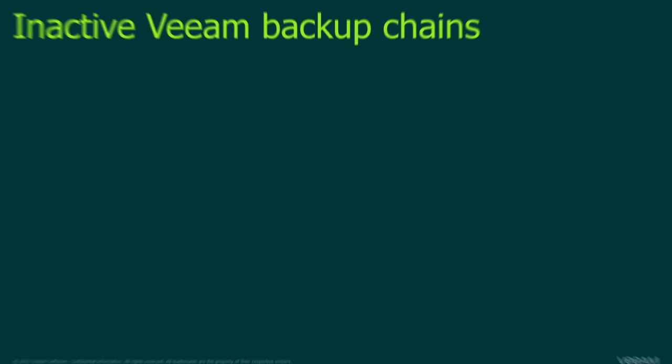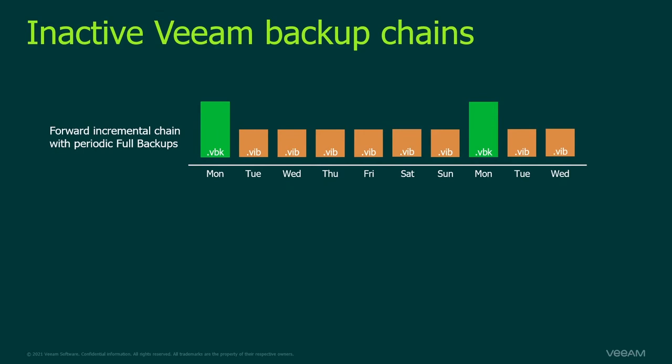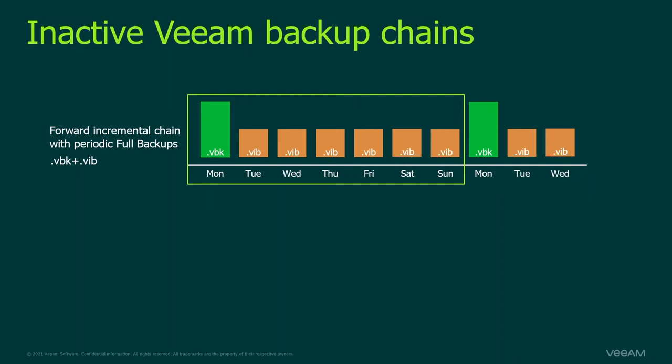What is an inactive chain? In a forward incremental backup chain with periodic full backups, the backup files of one chain are dependent on each other. For example, if you offloaded Monday through Saturday and then need to write a new incremental or run a synthetic full on Monday, you'd need to read those blocks back from object storage — which costs time and money. That's why we only move data to object storage when it's an inactive chain: when a new full backup is created, the old chain gets moved.